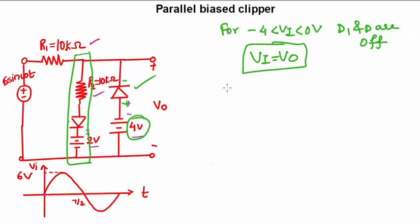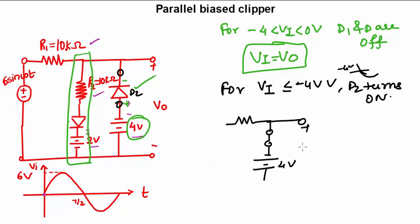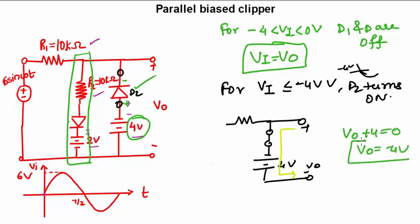When the voltage goes below −4 volts — for Vi ≤ −4 volts — D2 turns on and is shorted. The circuit then looks like: resistance, short-circuited diode, 4V battery, and output. Applying KVL in the output loop: Vo + 4 = 0, so Vo = −4 volts once the diode turns on. The diode turns on after −4 volts.